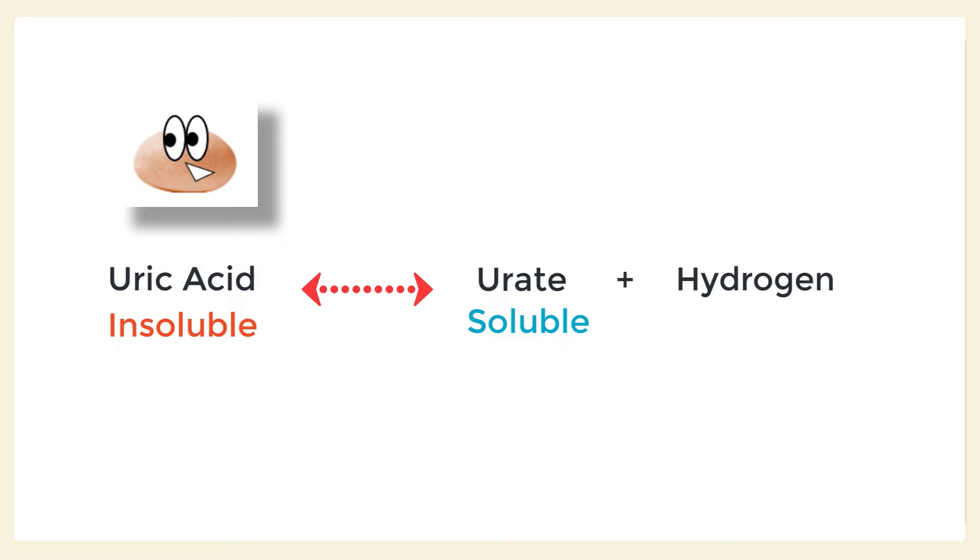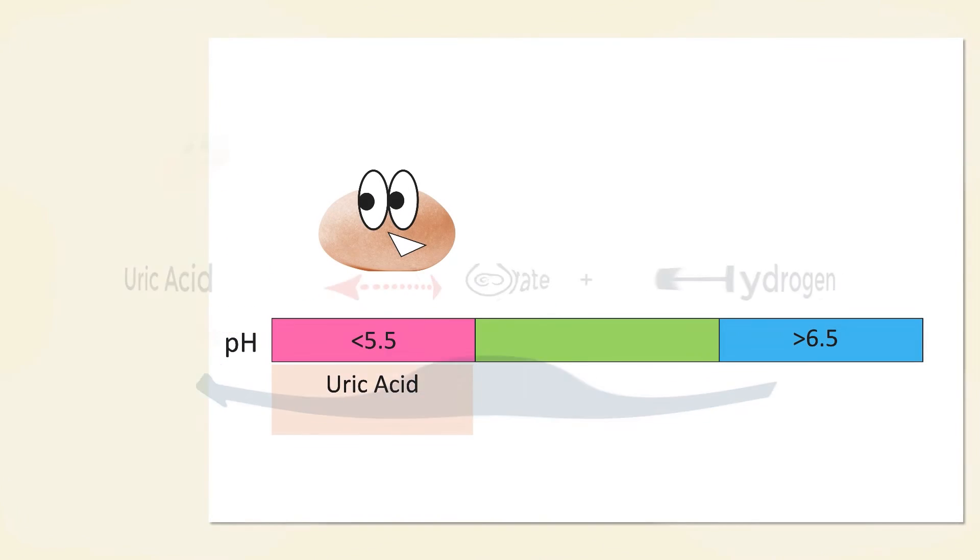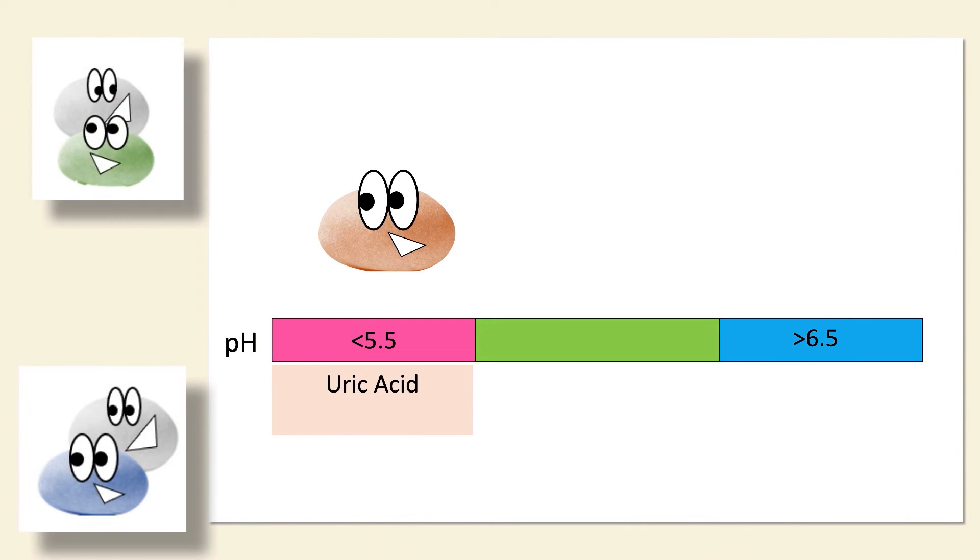Now, if we take this equation and we add more acid, so more hydrogen ions, we are going to shift this whole equation to the left and make more insoluble uric acid. So this now makes a lot of sense. In acidic urine, there are more hydrogen ions and as such, it will make more insoluble uric acid. And meanwhile, in this acidic urine, calcium and oxalate and phosphate remain very happily dissolved and are unlikely to precipitate.